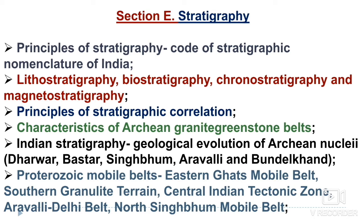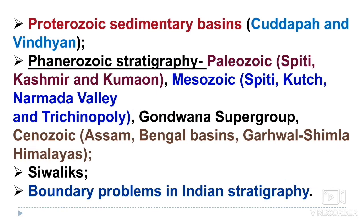Understanding previous year question patterns will be helpful. In Indian stratigraphy, all cratons — Bastar, Dharwar, and Bundelkhand — are important. In Proterozoic mobile belts, the Eastern Ghats Mobile Belt, Southern Granulite Terrain, and CITZ are very important. Proterozoic sedimentary basins — Cuddapah and Vindhyan — are important. For Phanerozoic stratigraphy: Paleozoic — Spiti, Kashmir, and Kumaon Himalaya; Mesozoic — Jurassic Kutch, Narmada Valley, and Trichinopoly; and the Gondwana Supergroup.